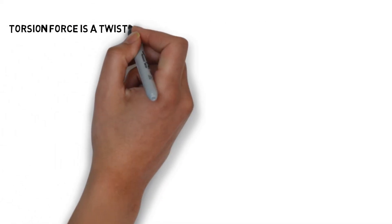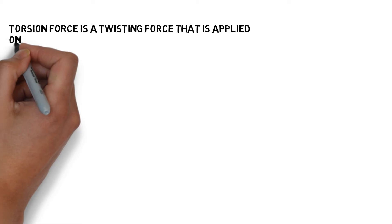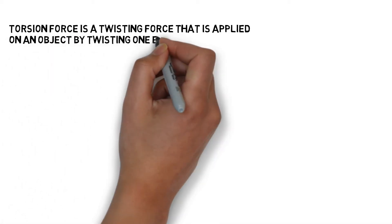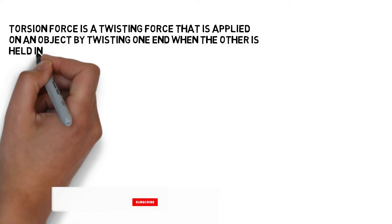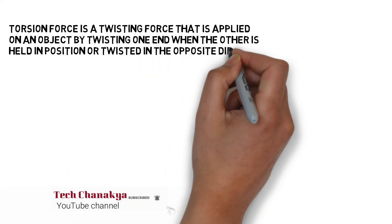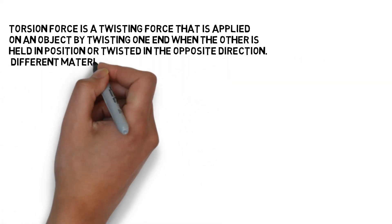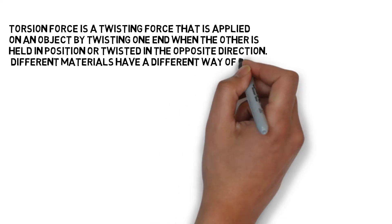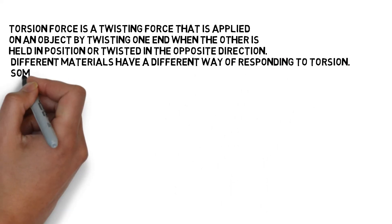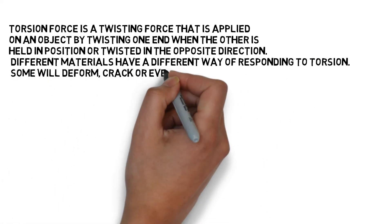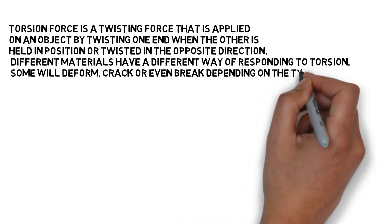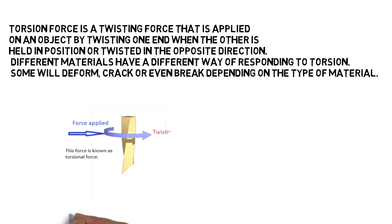Torsion force is a twisting force that is applied on an object by twisting one end when the other is held in position or twisted in the opposite direction. Different materials have a different way of responding to torsion — some will deform, crack, or even break depending on the type of material.